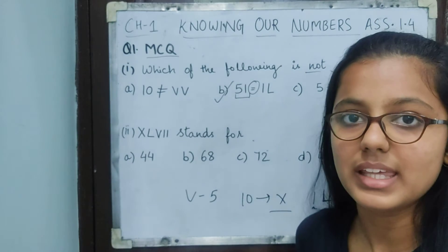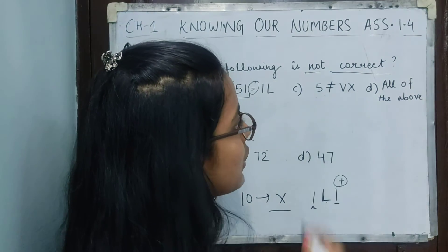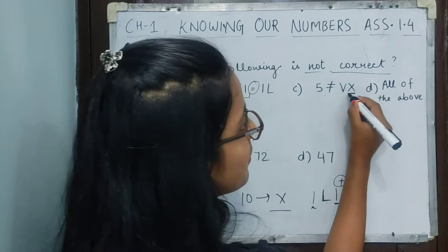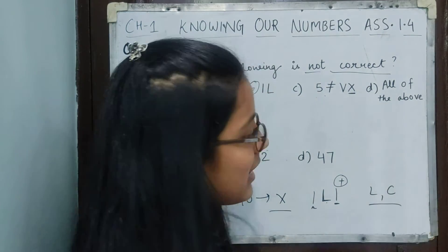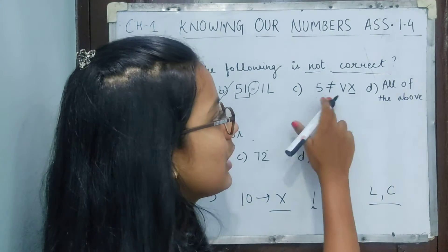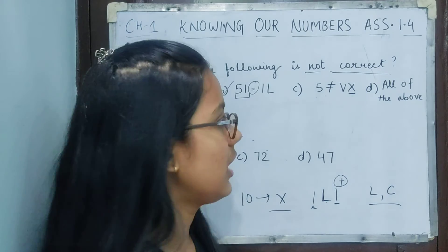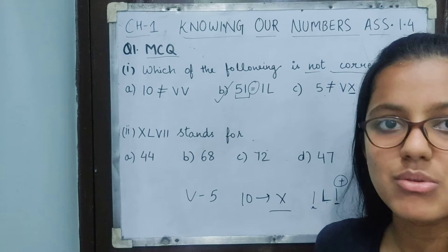Let's also check option C: 5 ≠ VX. Now X is never subtracted from V. X is always subtracted from L or C. We learned this in our rules, so this is also not equal, meaning this is also correctly written. And all of the above cannot be the answer because we found it - option B, 51 = IL.